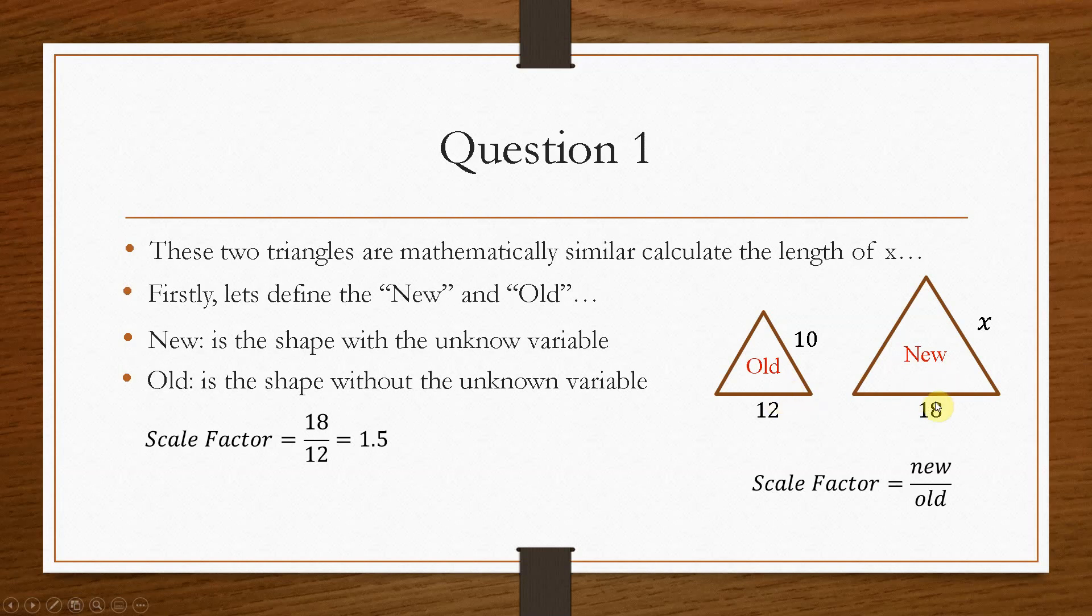So we do 18, because it's the new value, over the old, which is 12, which gives us a ratio of 1.5. So this tells us that the big triangle is 1.5 times bigger than the small triangle.